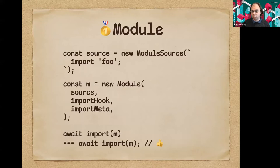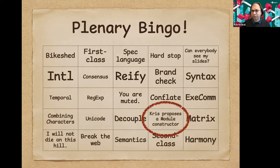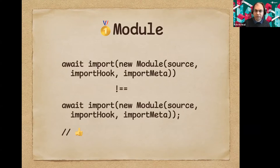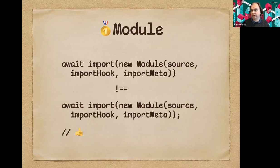If you use dynamic import on the same module instance twice you get the same namespace object. However, if you create two module instances from the same source you amortize the cost of compiling the source but get separate instances — this becomes significant when it's possible to create multiple instances in different evaluator scopes. The idea is that we ensure a one-to-one-to-one relationship of all things corresponding to a module instance per construction.